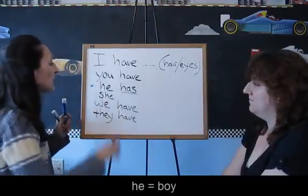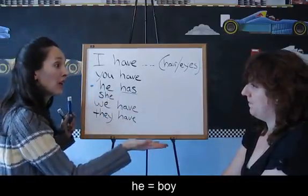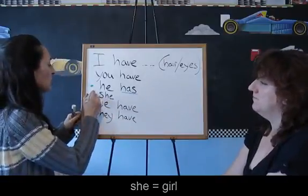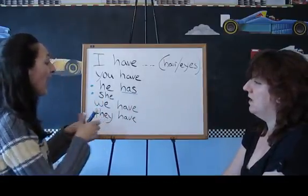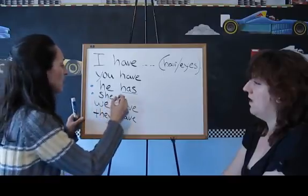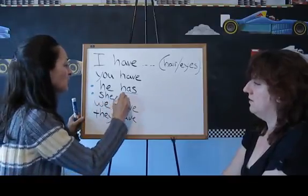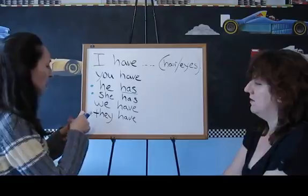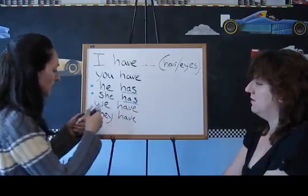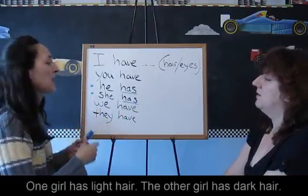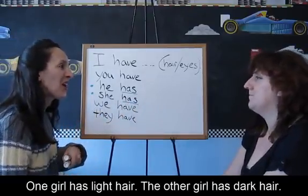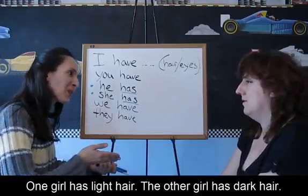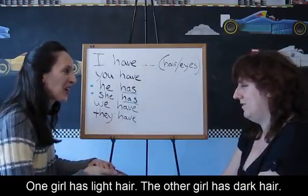Look — he is for the boy, she is for the girl. She also uses has. So not 'she have' — she has. So one girl has light hair, the other girl has dark hair.